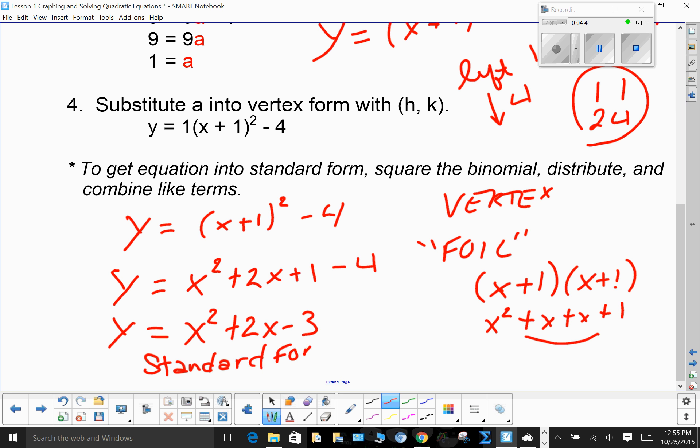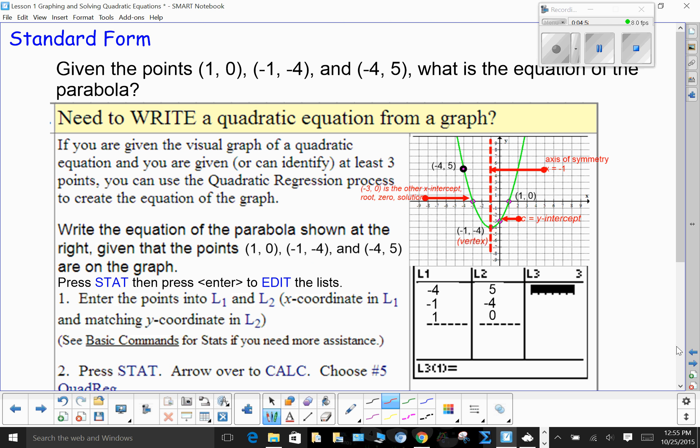So really going from getting the vertex and then going to the standard form is actually very easy. The catch is you have to know the vertex, the point that's the vertex. Okay, what if you're given the points (1, 0), (-1, -4), and (-4, 5)? And you want to know the equation of the parabola. You know they all lie on the parabola, but you don't know what the equation is. You don't know what one, if any of them, are the vertex.